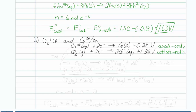I will take the top one and reverse it: cobalt going to cobalt two plus aqueous, plus two electrons. The bottom one I'll do as is: chlorine gas, plus two electrons, going to two chlorides.